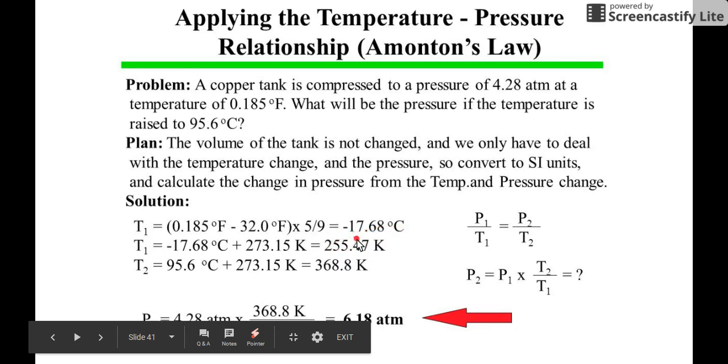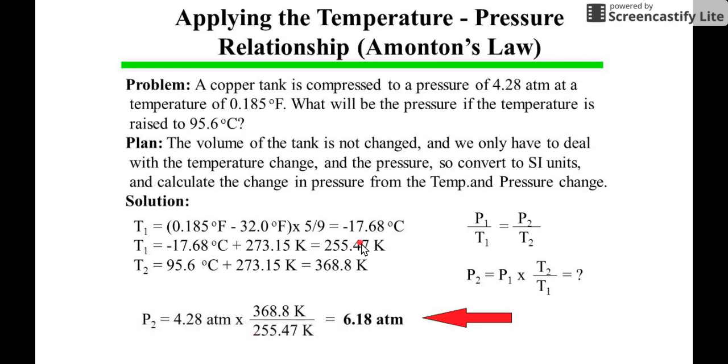This is the value you'll be using for T1. For T2, because it's in Celsius already, you just have to add 273.15. So T2's value is 368.8 Kelvin.